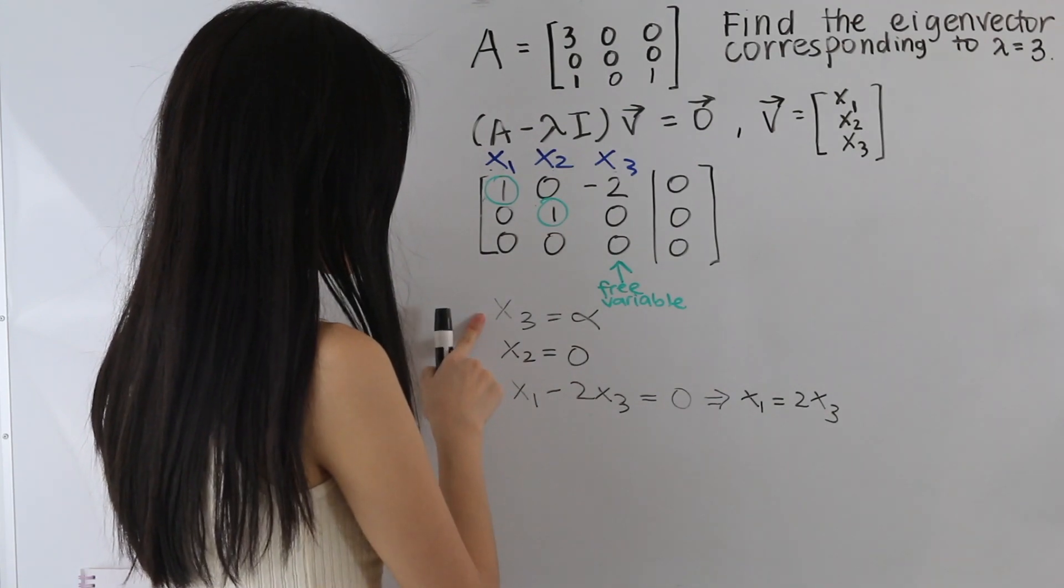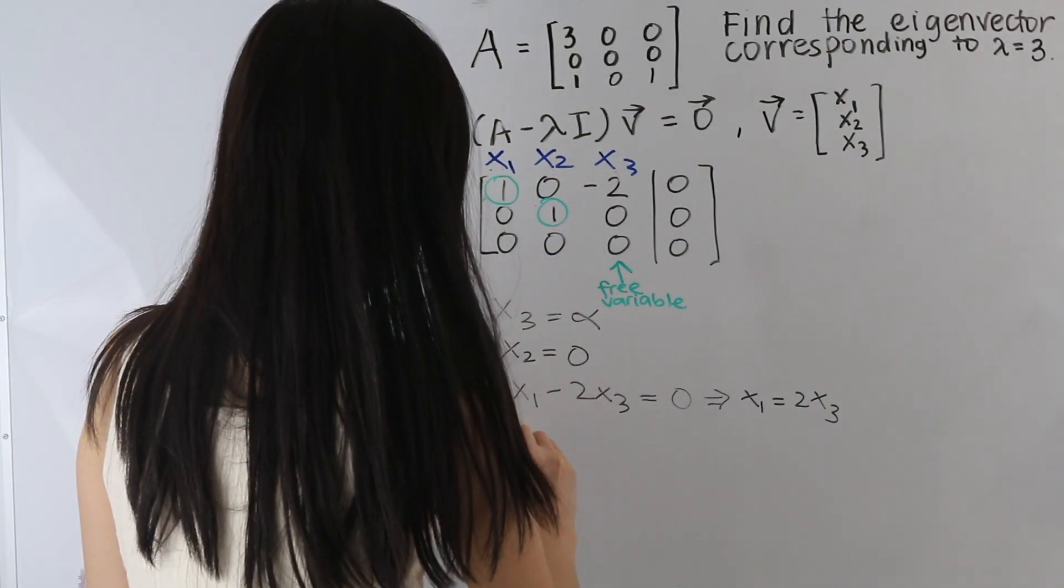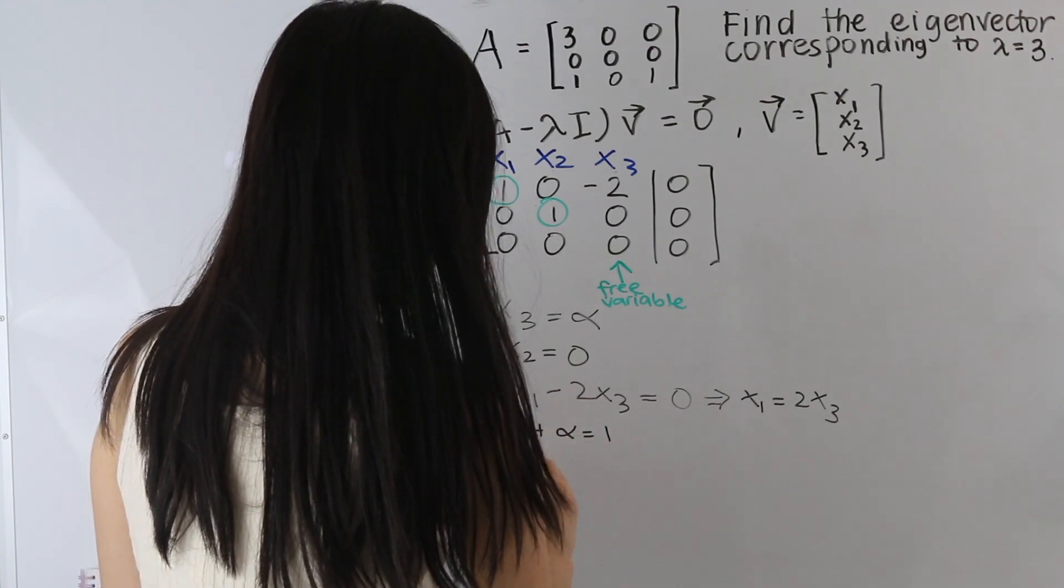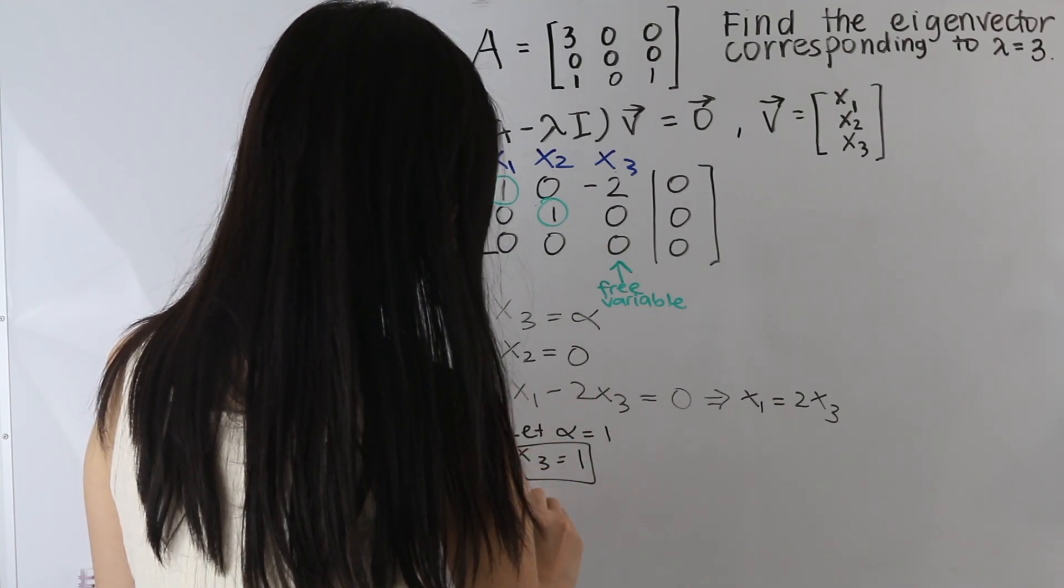So let's go ahead and let our alpha equal to 1. So we get x3 is equal to 1. And we have x2 equal to 0.